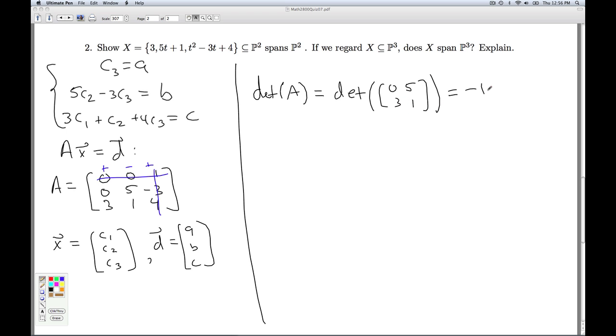And when I do that arithmetic, I get negative 15. And what's important about negative 15? It's not 0. That tells me that a is invertible. So that tells me that ax equals d has a solution. In fact, it's a unique solution for every choice d.